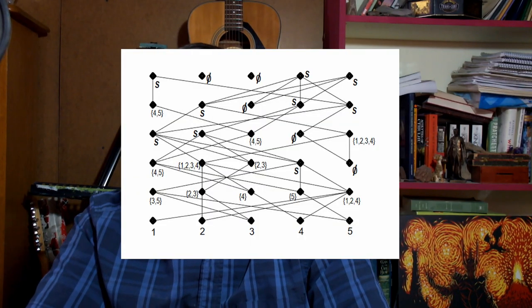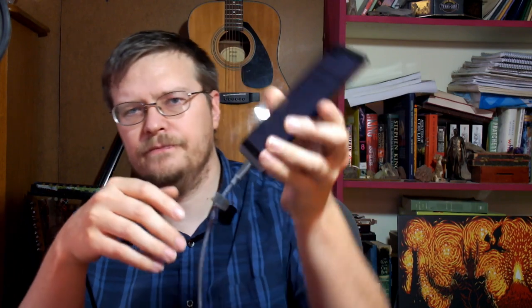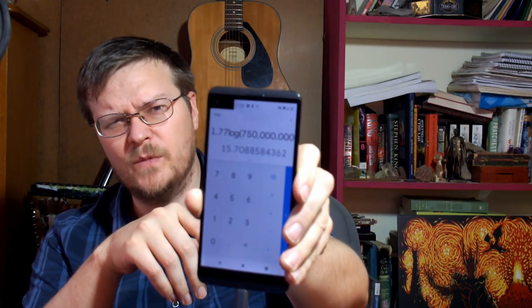So Chang drew a bunch of dots, connected them with lines at random, and came up with a quick, dirty equation for guessing the most recent common ancestor point for a population. That equation is 1.77 log n, where n is the current population size, and the result is the number of generations back you have to go to find the same person in every single family tree. So let's look at Europe: 1.77 log 750 million — about 16 generations, which is roughly 500 years. Preposterous, right? He thought so too.